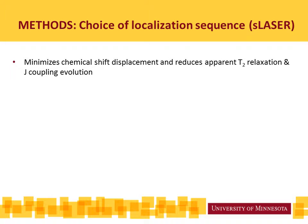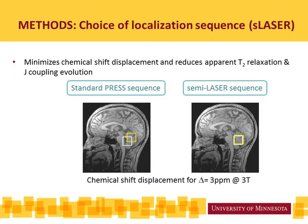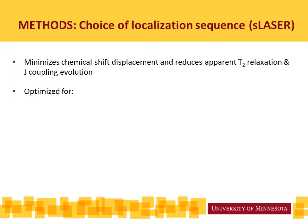A few words on our choice for the localization sequence, which is non-standard. First of all, the sequence minimizes chemical shift displacement errors, and this is really the main reason to use it over, for example, the standard PRESS sequence at 3 tesla. It also reduces apparent T2 relaxation and J-coupling evolution. Here I'm showing an example of chemical shift displacement errors with this in-house developed semi-LASER sequence versus the standard PRESS sequence as available on the Siemens platform. The displacement is shown for two resonances that are 3 ppm apart at 3 tesla — these are the two ends of the spectrum that can be localized differently in space.